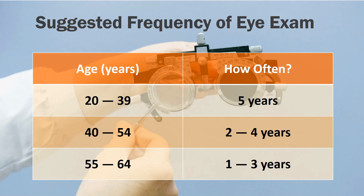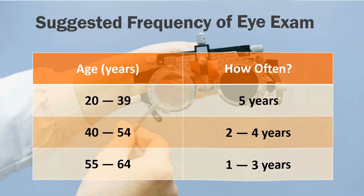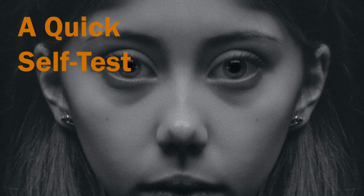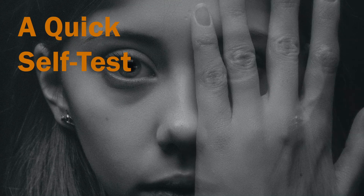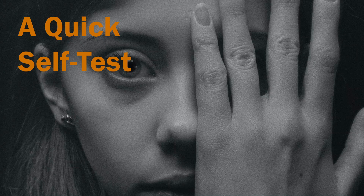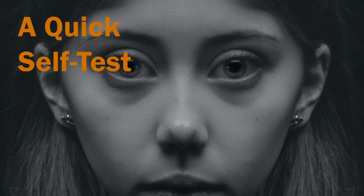For ages from 40 to 54, get the eyes checked every two to four years. For ages 55 to 64, get your eyes checked every one to three years. One quick idea is to cover one eye with a hand and see if the vision is abnormal through the other eye.